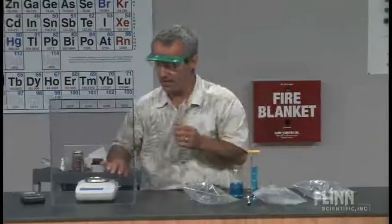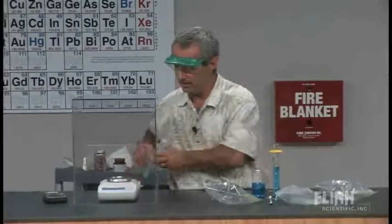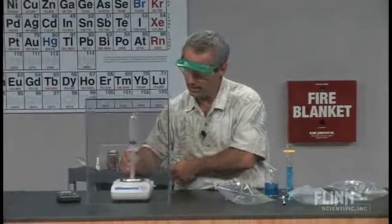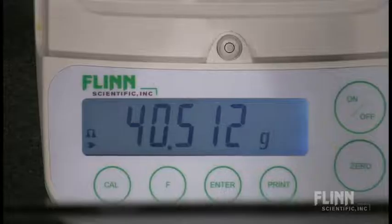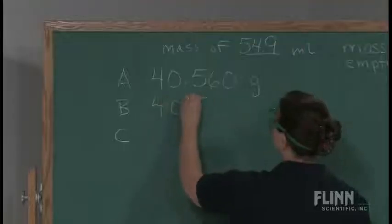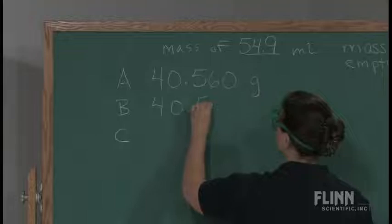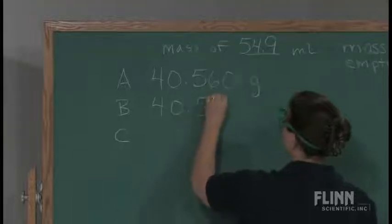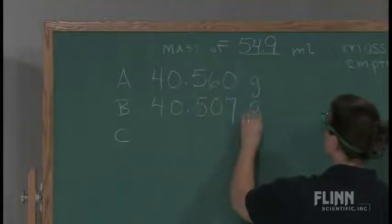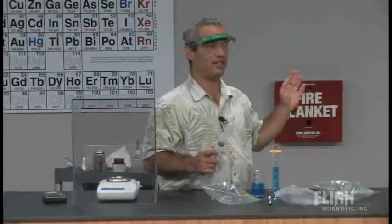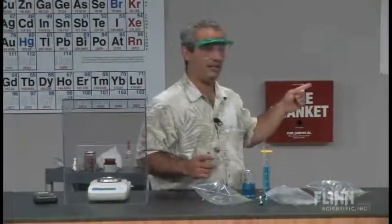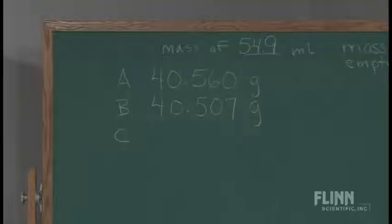This is sample B plus the syringe. So we'll re-zero it. And we're getting a reading of 40.507 grams. Even without doing any subtraction, I can just look at that and see that B is less dense than A.